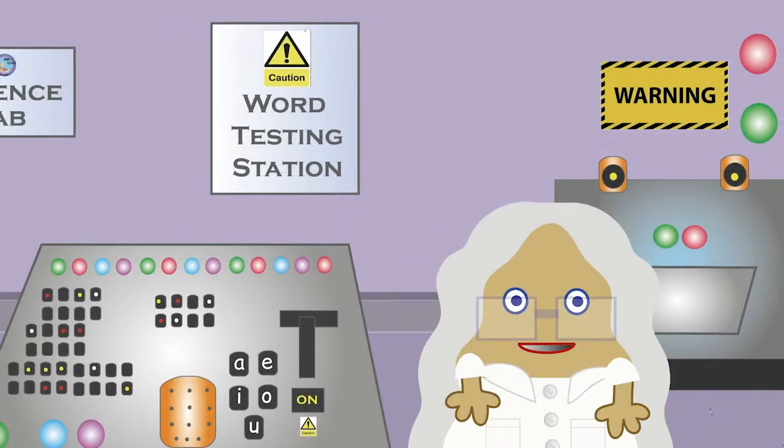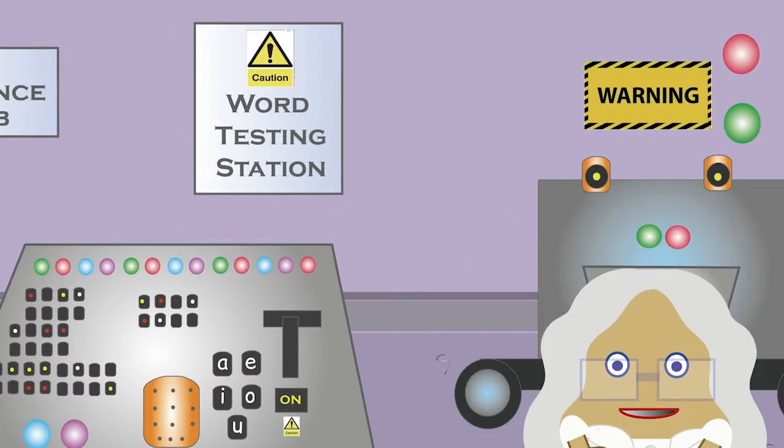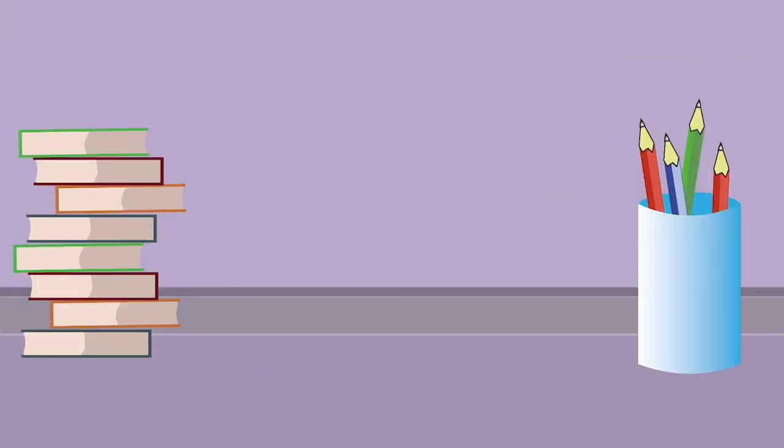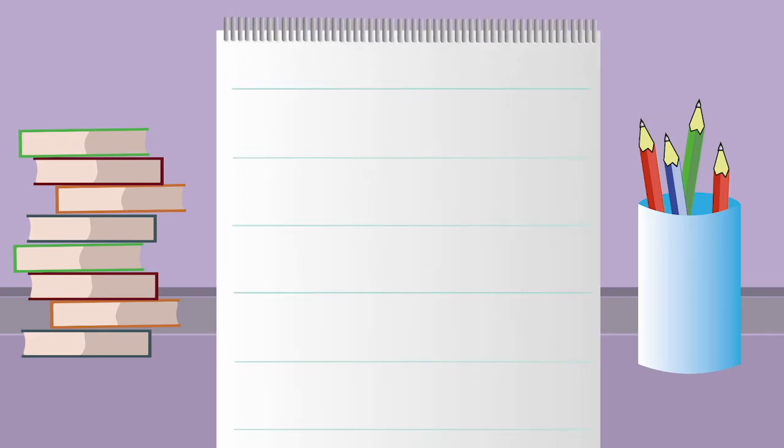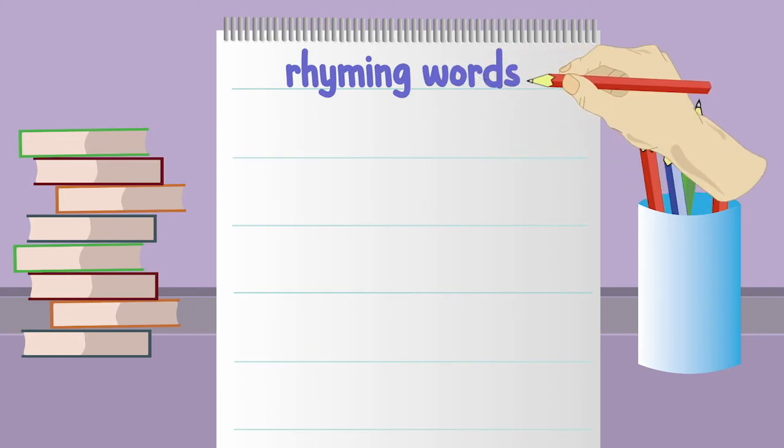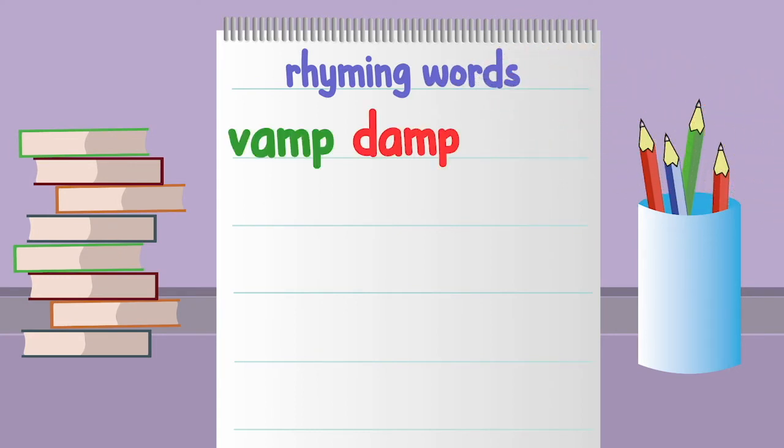Now you need to find the word that does not rhyme. We need to make a list of only rhyming words. Try to read them before I do! Vamp, damp, dent. Which one does not rhyme? Dent. Vamp and damp are rhyming words.